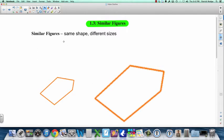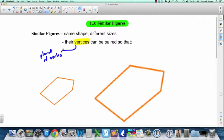With similar figures, their vertices can be paired. First of all, let's talk for a second about this word, vertices. Vertices is the plural of vertex. When it talks about the vertices of one of these shapes, it's all these points, right? One of them is a vertex, but all of them together are called vertices. Let's actually name this. Let's call this A, B, C, D, E. And we'll call this one F, G, H, I, J.